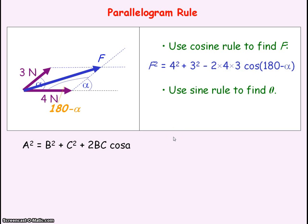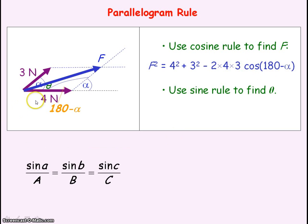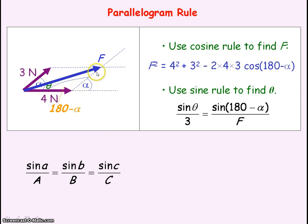We use the sine rule to find angle theta — the angle the resultant force makes with the horizontal. Sine of theta divided by the length it's opposite to, which is 3N, equals sine of (180 minus alpha) divided by F. If alpha is known and F is known, you can then work out angle theta.